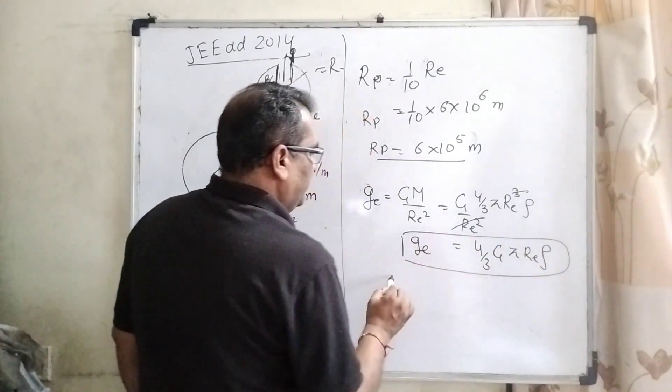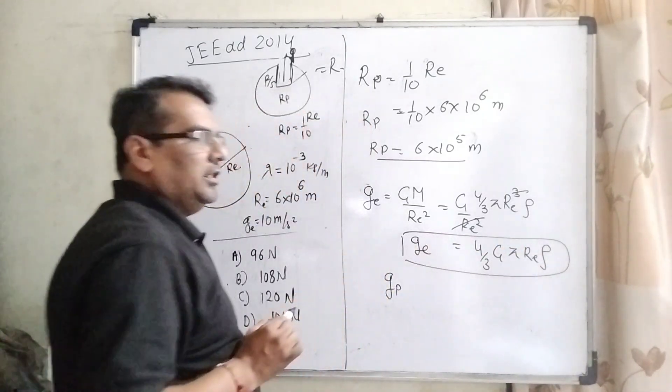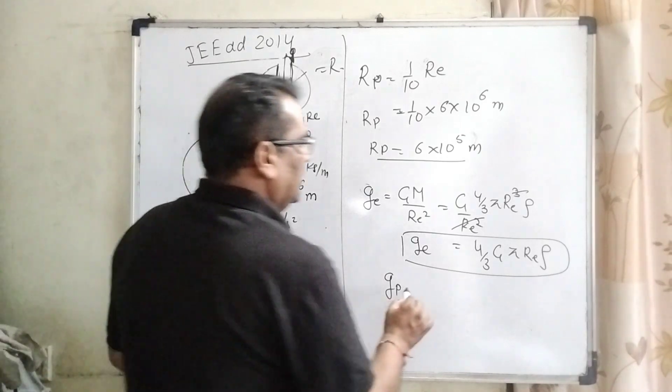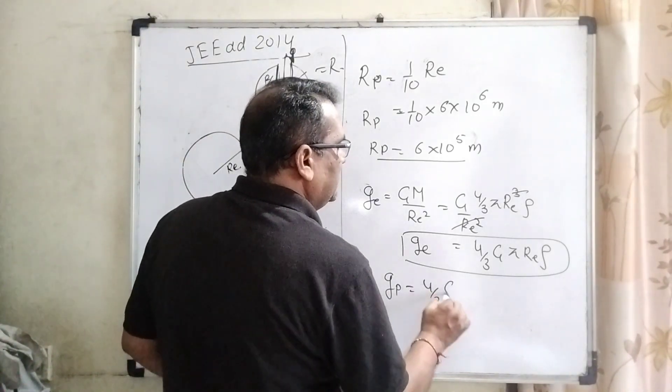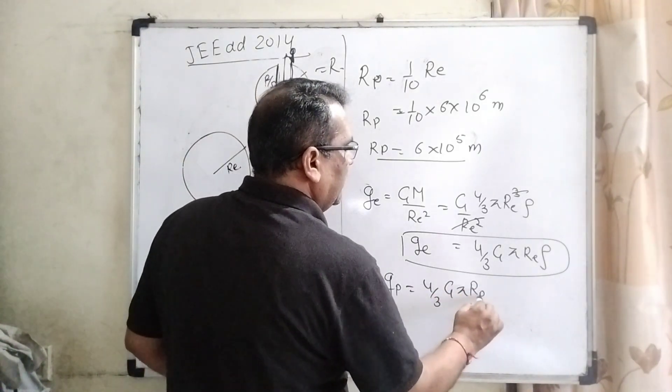Okay. Now, for acceleration due to gravity at the planet, same is, you can see 4 by 3 G, pi, Rp and density. Here density is the same.